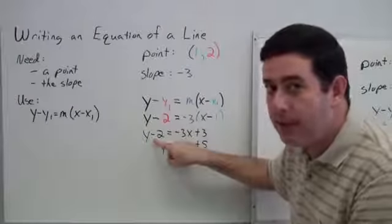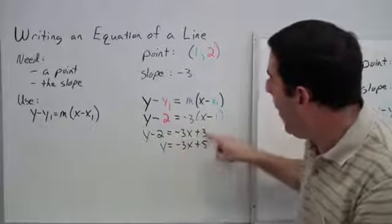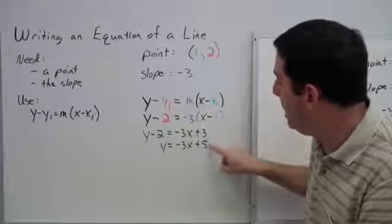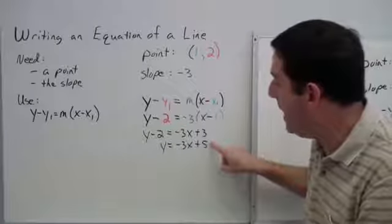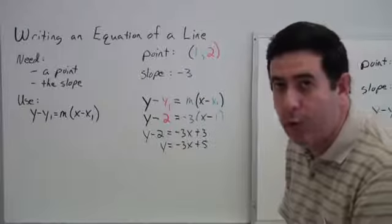To move the negative 2, let's add 2 to both sides. When I add 2, it'll leave me just a y over here, and 3 plus 2 gives me 5 on this side. So, now here, when it's solved for y, is slope-intercept form.